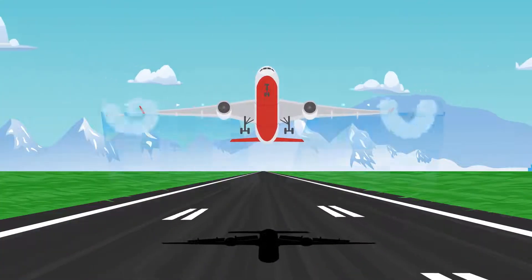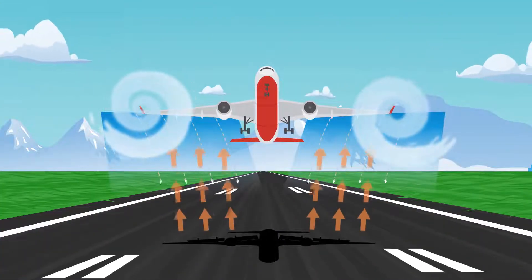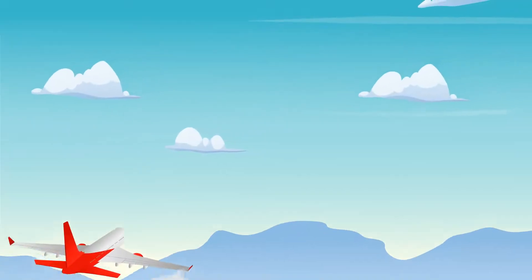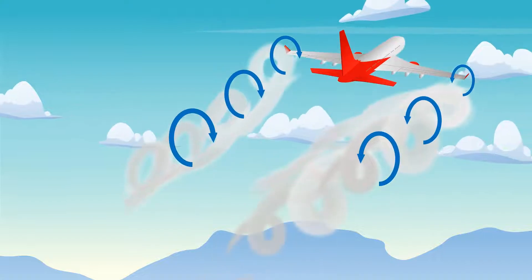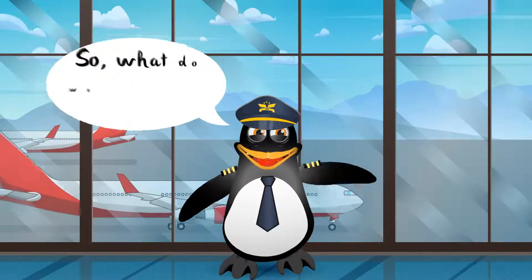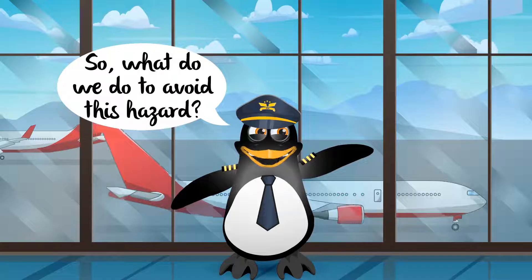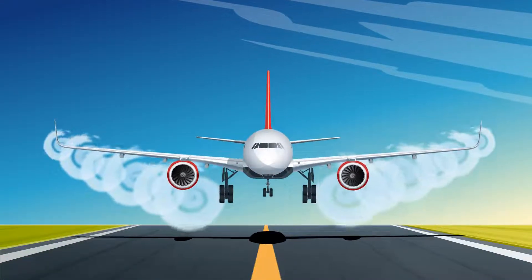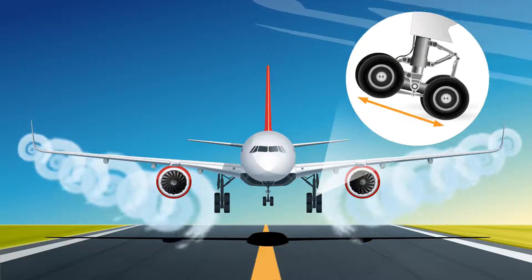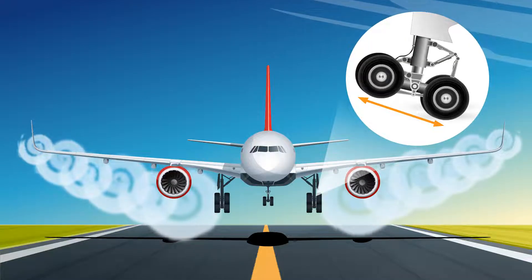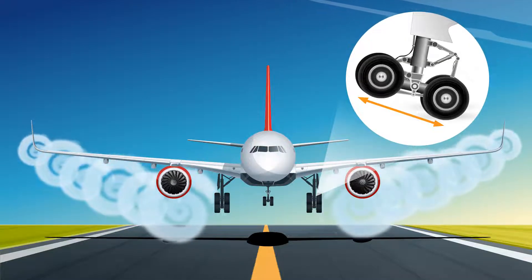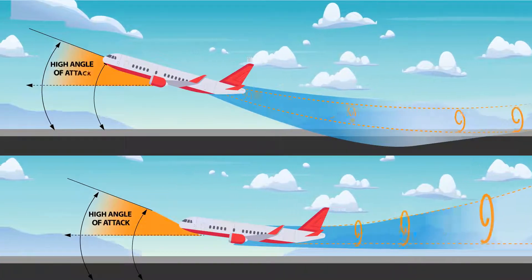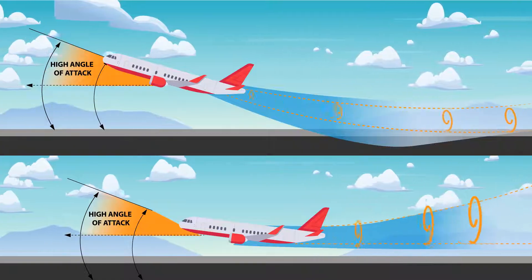Wingtip vortices will be at maximum strength during the takeoff, climb, and landing phases of flight. Due to these vortices, wake turbulence is a dangerous hazard that can occur. Wingtip vortices are greatest when an aircraft is heavy, clean — meaning with flaps up and landing gear retracted — and also traveling slowly. This occurs mostly when an aircraft is departing or arriving at high angles of attack necessary for takeoff and landing.